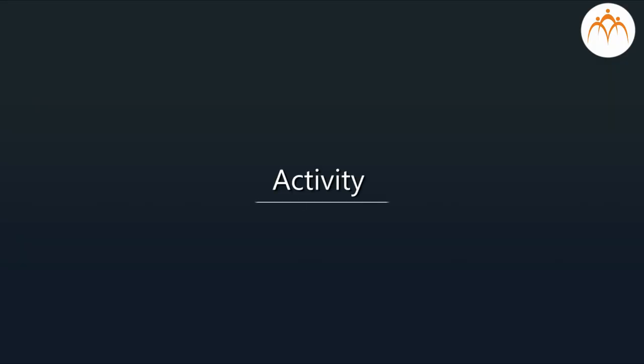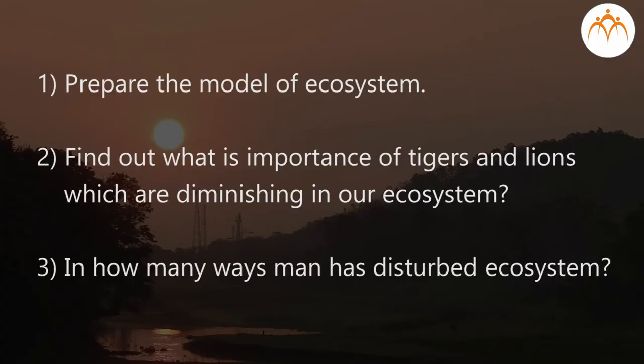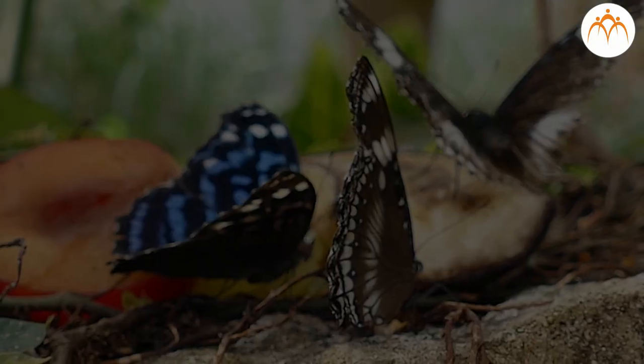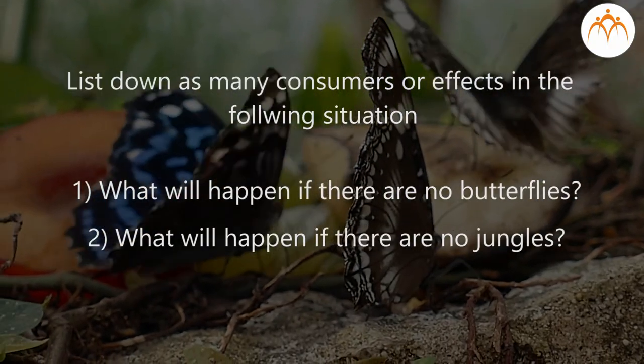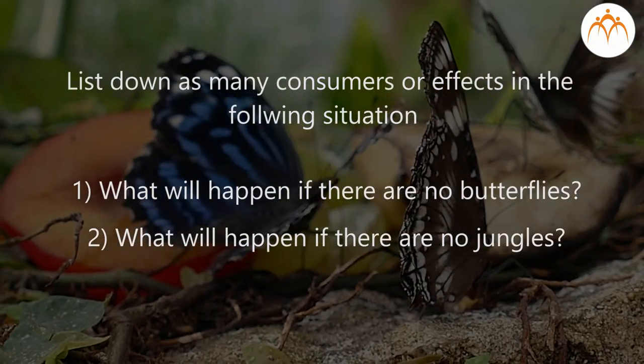Activity: Prepare a model of an ecosystem. Find out what is the importance of tigers and lions which are diminishing in our ecosystem. In how many ways has man disturbed the ecosystem? What will happen if there are no butterflies?